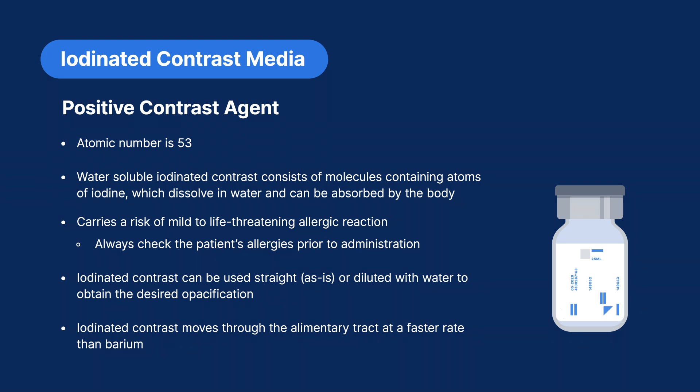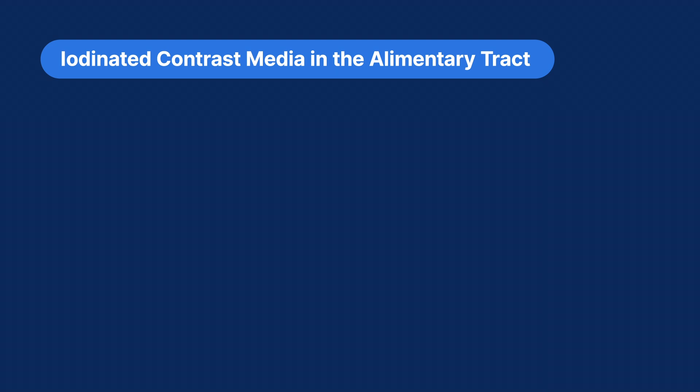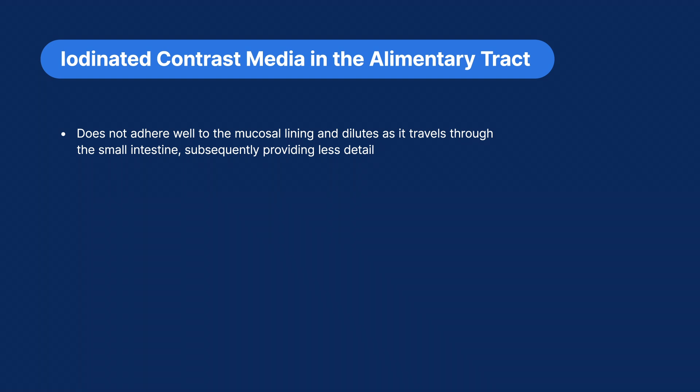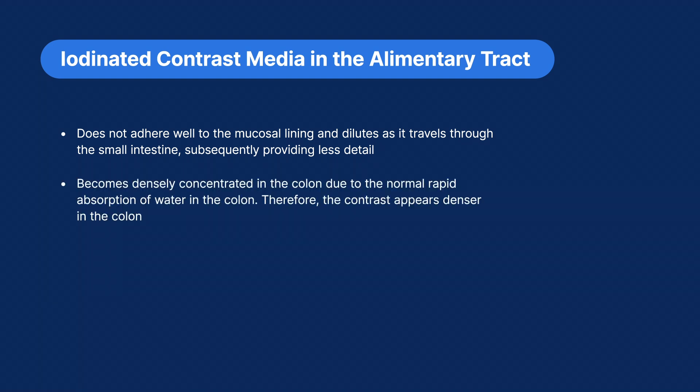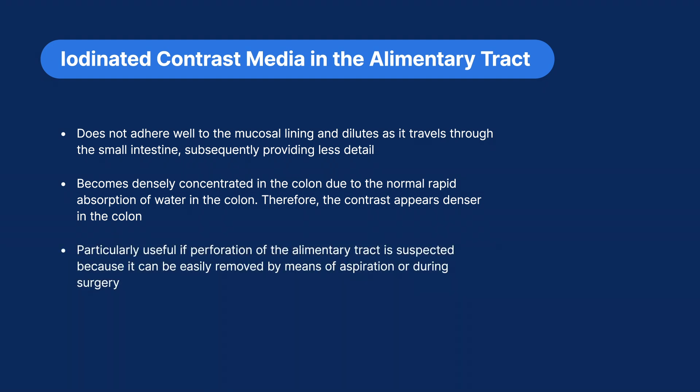Iodinated contrast moves at a faster rate through the alimentary tract than barium. It does not adhere well to the mucosal lining and dilutes as it travels through the small intestine, subsequently providing less detail. It becomes densely concentrated in the colon due to the normal rapid absorption of water, so the contrast appears denser in the colon. It is particularly useful if perforation of the alimentary tract is suspected, as it can be easily removed by aspiration or during surgery, and is readily absorbed from the peritoneum and excreted by the kidneys.